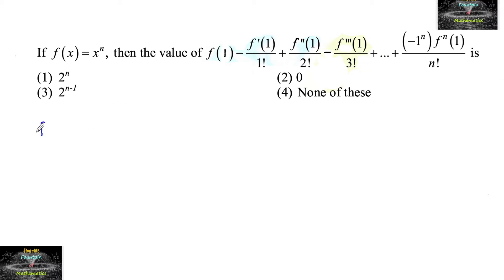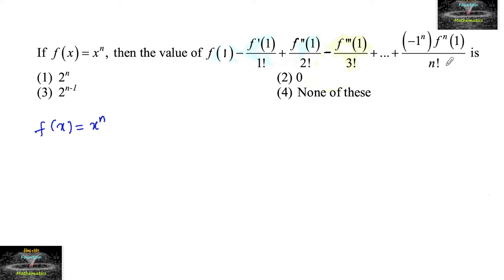Given f(x) = xⁿ, we need to find the value of f(1) minus f'(1) by 1 factorial, plus f''(1) by 2 factorial, minus f'''(1) by 3 factorial, and so on, up to (-1)ⁿ times the nth derivative of f divided by n factorial.